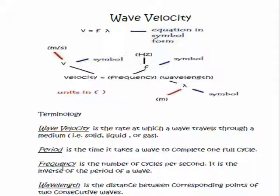So we have our terminology here. The period is the time it takes a wave to complete one full cycle. The frequency is the number of cycles per second, and so on.